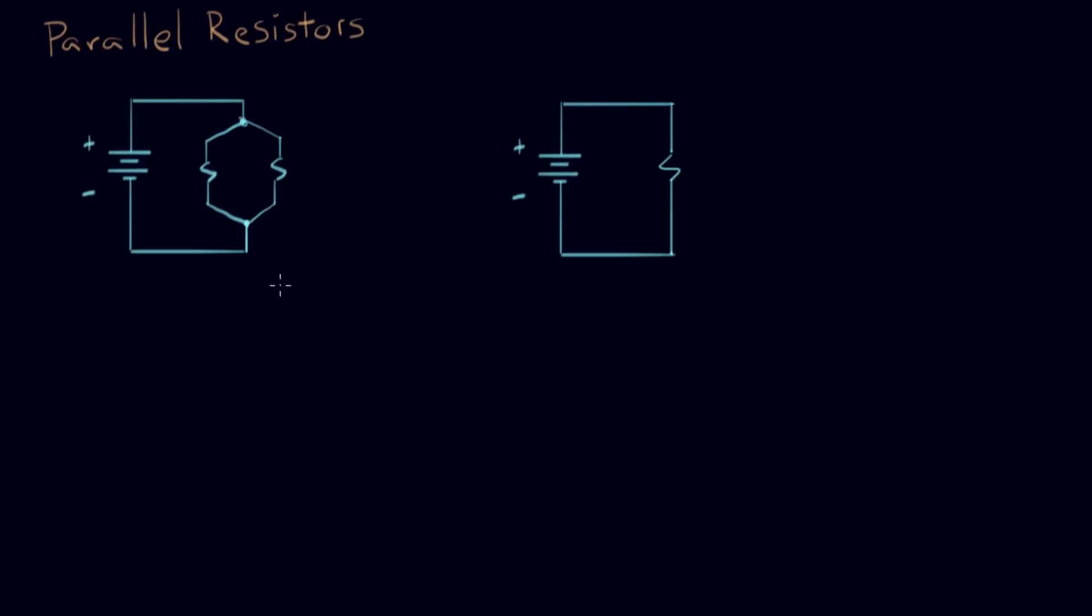In the last video, we introduced the idea of parallel resistors. These two resistors are in parallel with each other because they share nodes and they have the same voltage across them. So that configuration is called a parallel resistor.